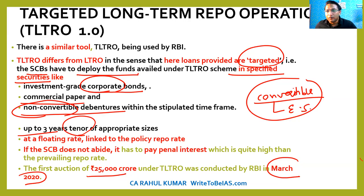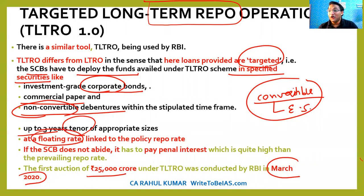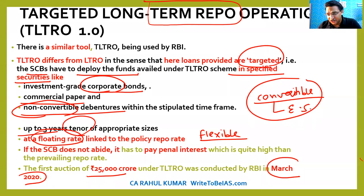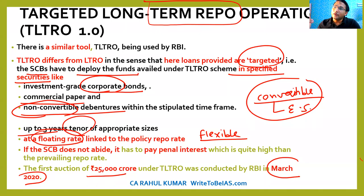Unlike LTRO, in TLTRO the rate of interest is flexible, not fixed. It depends upon the discretion of RBI whether they want to keep it flexible or variable. Depending on every operation, RBI can decide whether the rate of interest is going to be flexible or fixed. There is no predefined formula — normally RBI keeps it fixed but from operation to operation it can change.